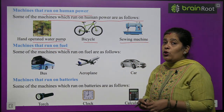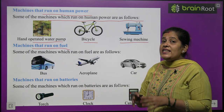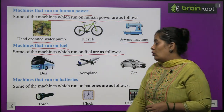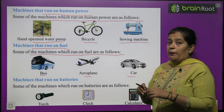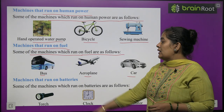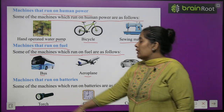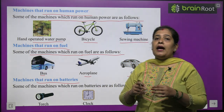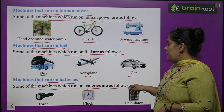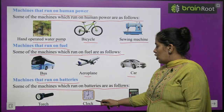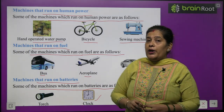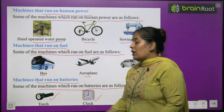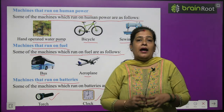Machine that runs on fuel — wo machines jo fuel matlab petrol ya diesel se chalte hain. Some of the machines which run on fuel are: bus, aeroplane, and car. Machine that run on batteries — ab hum un machines ke baare mein padheenge jo batteries se operate hoti hain. Some of the machines which run on batteries are: torch, clock, and calculator. Calculator mein cell dalta hai, ghar mein jo clock hai usme bhi cell dalta hai, aur torch mein bhi — jise hum batteries kehte hain.